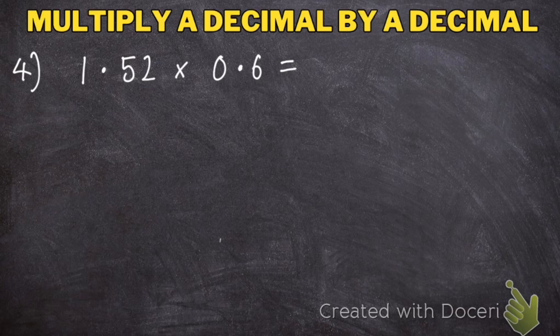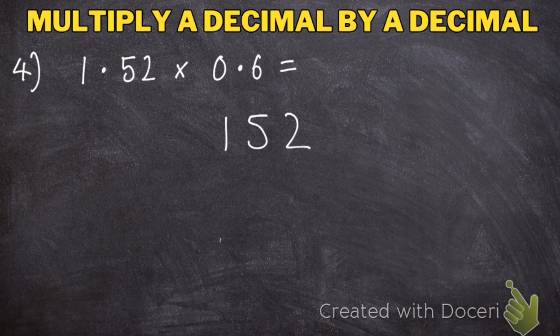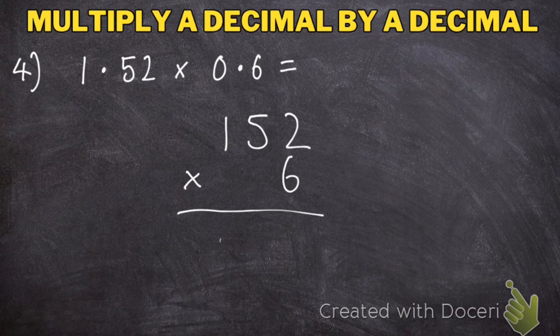In my last example, I'm going to do 152 multiplied by 6, ignoring the decimal points. 6 times 2 makes 12. 6 times 5 makes 30, add 1 makes 31. 6 times 1 makes 6, add 3 makes 9.